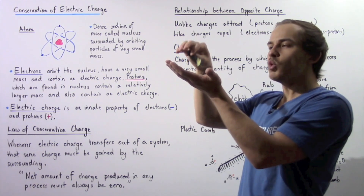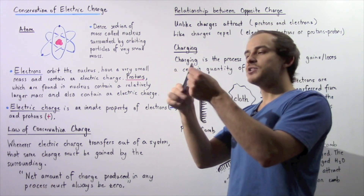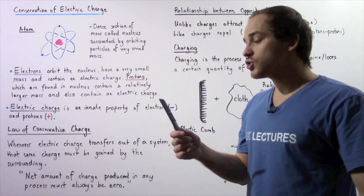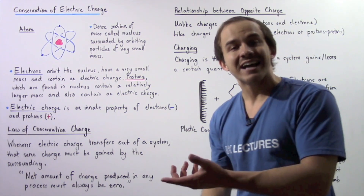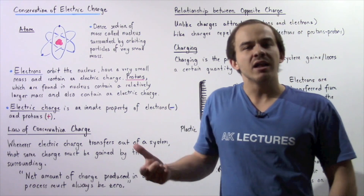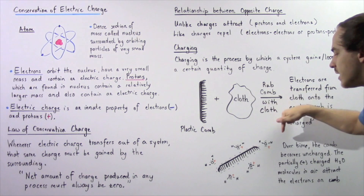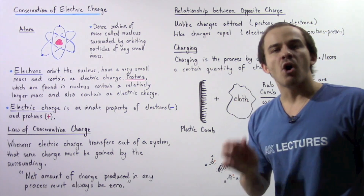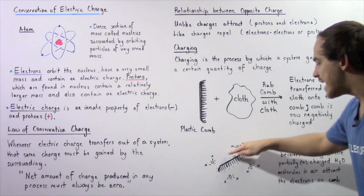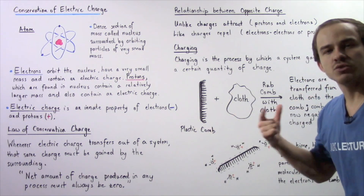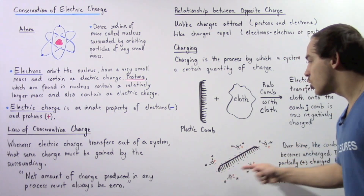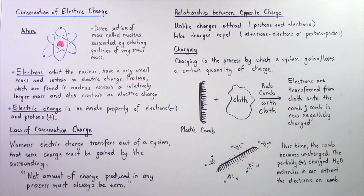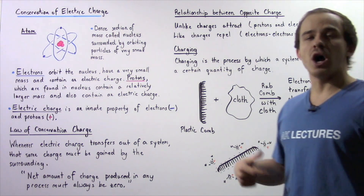Eventually this comb will lose that electric charge, and because it loses electric charge, that charge has to go somewhere. It goes into the molecules found in the air. Each oxygen atom inside a water molecule has a partial positive charge, so electrons transfer out of the comb and into water molecules found in the air. Eventually the comb loses its negative electric charge and becomes uncharged, because the partially positively charged H₂O molecules in the air attract the electrons in the comb.